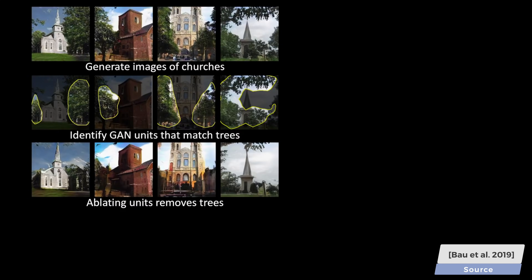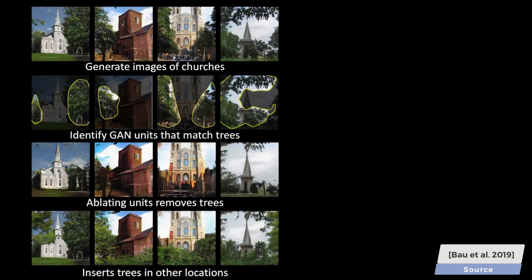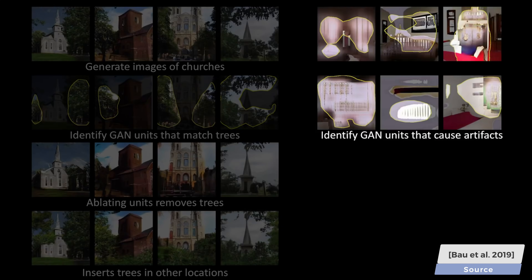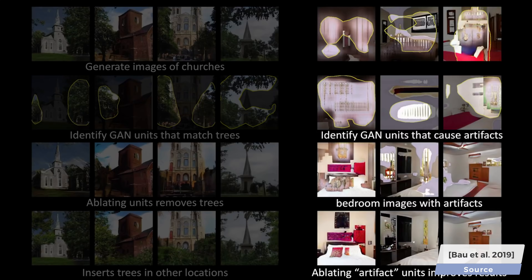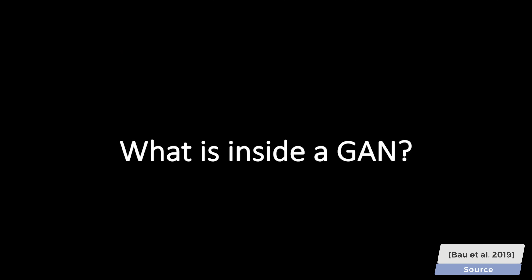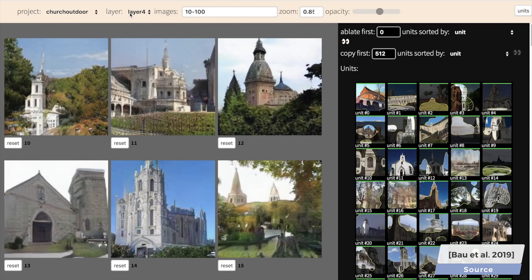Such concepts include trees, sky, clouds, and more. This means analyzing that these neurons are responsible for buildings to appear in the image, and those will generate clouds. Interestingly, such agreements can be found, which means way more than just creating visualizations like this.